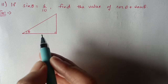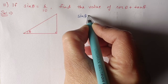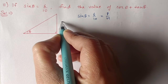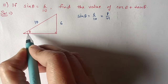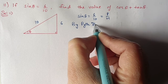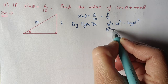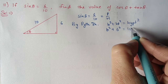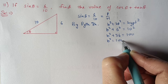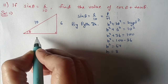Next, Question 11: if sin θ is given as 6 by 10, find the value of cos θ plus tan θ. First we make a right angle triangle; θ is an acute angle. sin θ is perpendicular by hypotenuse, so perpendicular is 6 and hypotenuse is 10. By Pythagoras theorem: base square plus height square equals hypotenuse square. Base square plus 36 equals 100, so base square equals 64, meaning base equals 8.